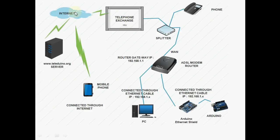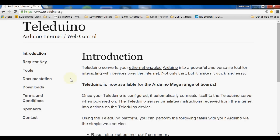The telephone exchange is connected with the internet cloud, and from this internet cloud a Teleduino.org server is connected, which is serving the requests we generate from the mobile phone. That request goes through the internet to the Teleduino server, and further from the Teleduino server it goes directly to the Ethernet shield, which controls the Arduino UNO.